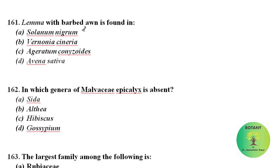Lemma with barbed awn is found in — Lemma is a part of spikelet; it is the lowermost of two chaff-like bracts enclosing the grass florets. An awn is a bristle-like structure. This condition occurs in family Poaceae. The member of family Poaceae among the options is Avena sativa.